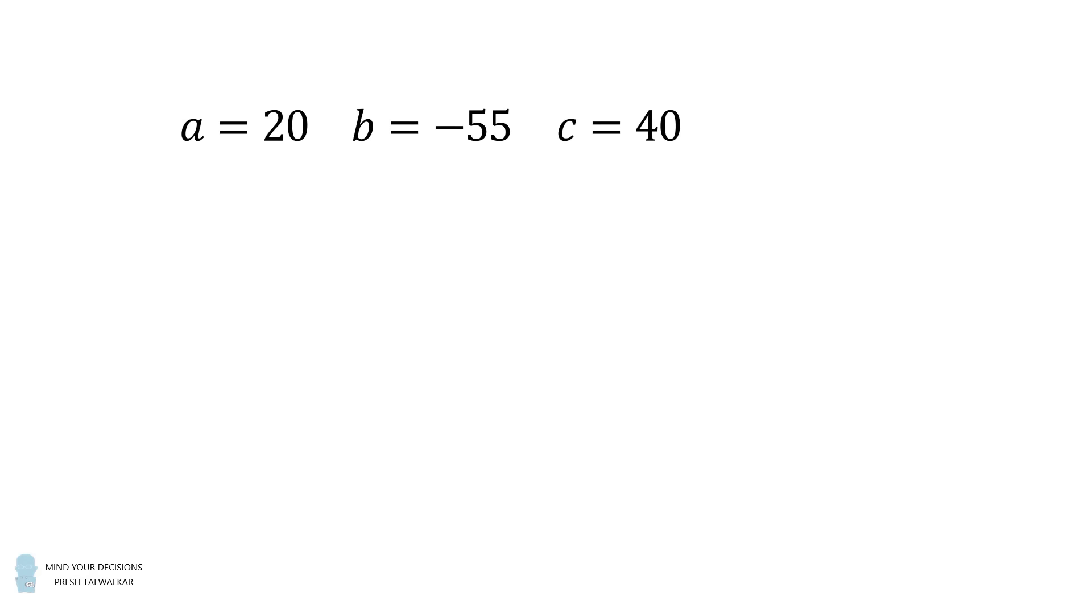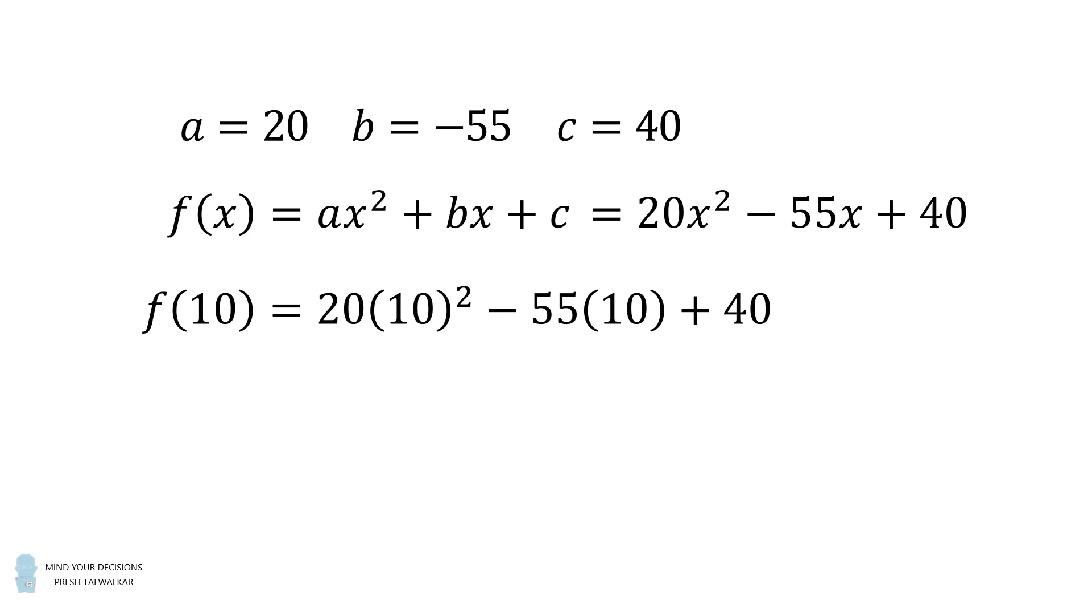And we have defined the function f(x) as equal to ax² + bx + c. So we substitute in the values of a, b, and c. So f(x) = 20x² - 55x + 40. Finally we need to know what happens when x is equal to 10. We substitute x = 10 and we carefully simplify this to get that f(10) = 1490. And that's the missing value.